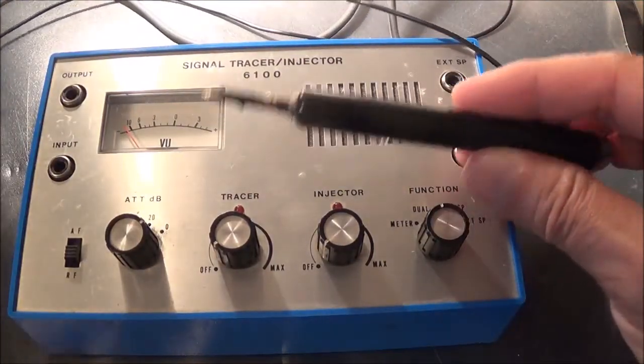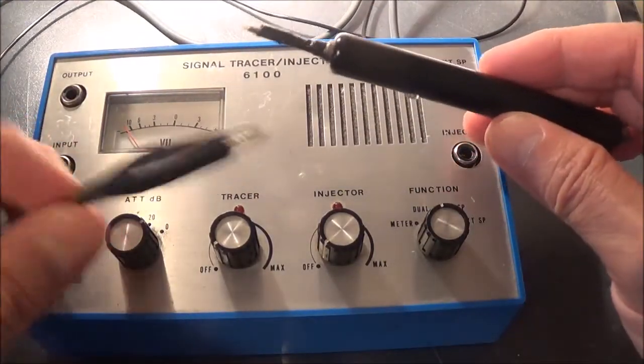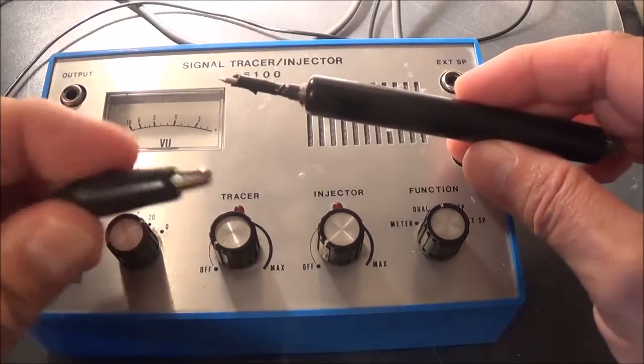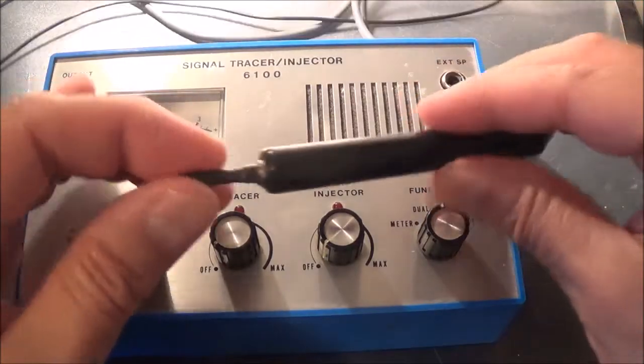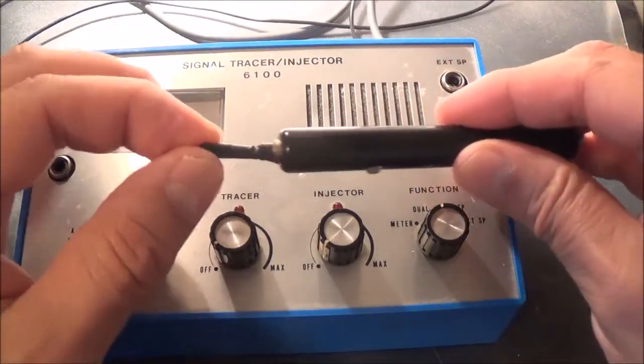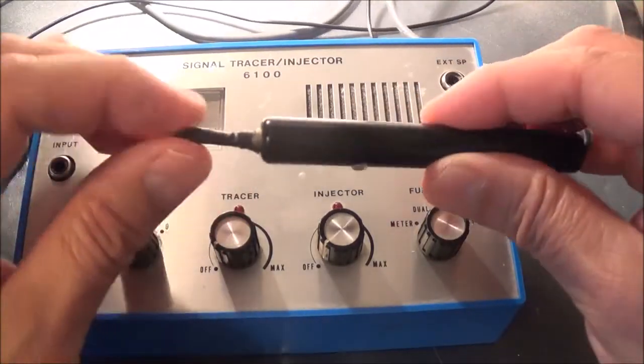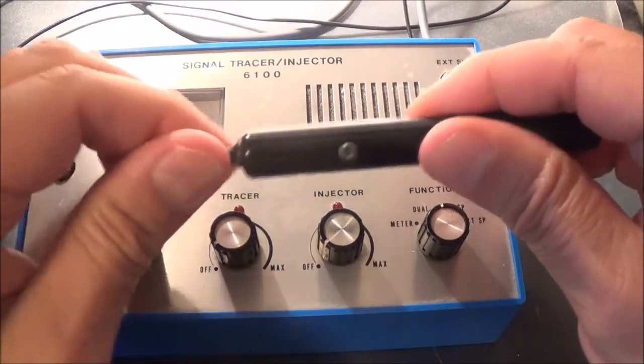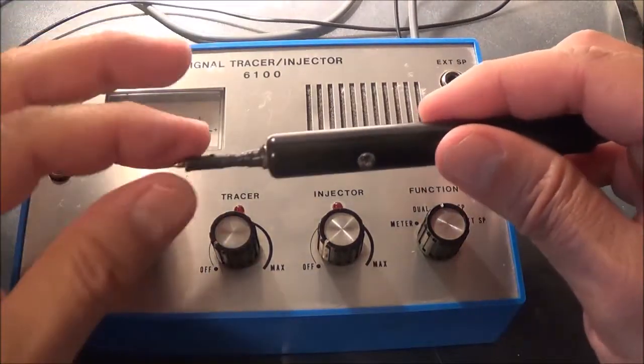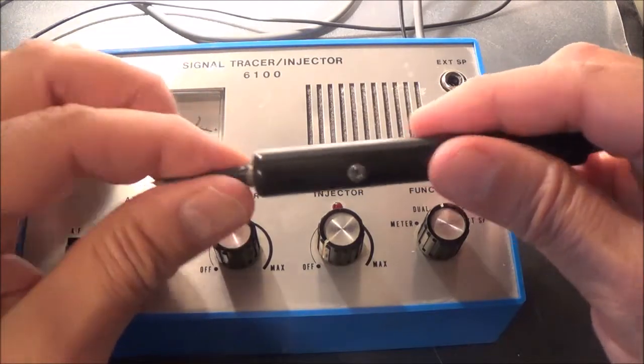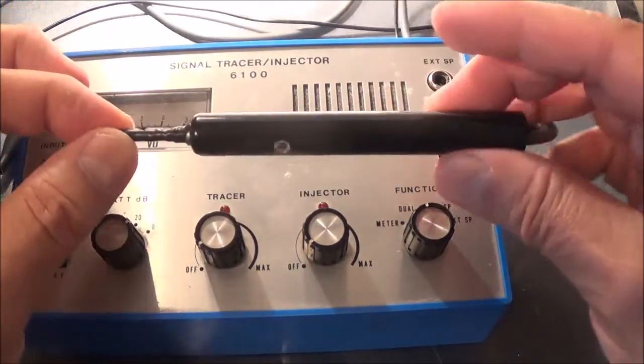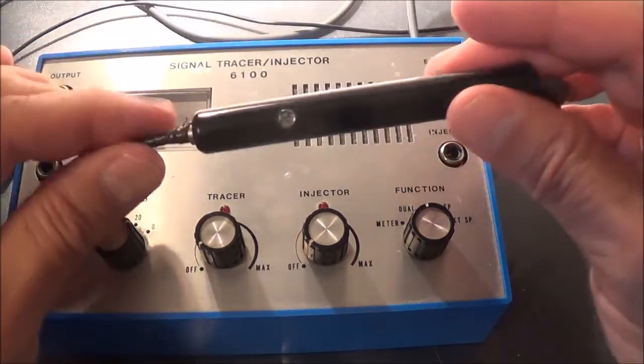Here is the tracer probe. This is the ground clip, and this thing lets you probe around. You can see I put tape on here because you do slip, and if you work on electronics a lot, if you don't short anything out here and there, you're not really doing anything.